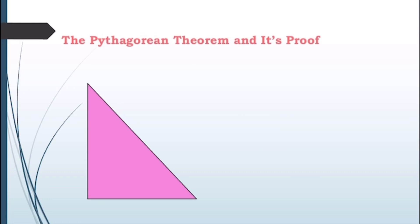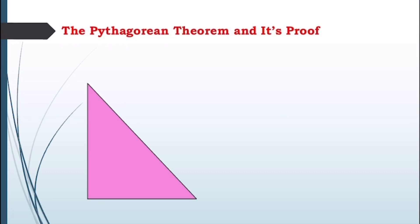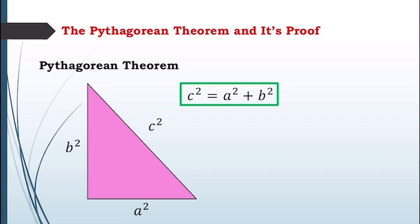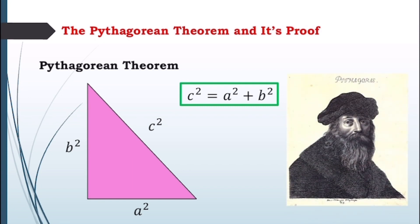Let's proceed to the Pythagorean theorem and its proof. The Pythagorean theorem states that the square of the hypotenuse of a right triangle is equal to the sum of the squares of the legs. The Pythagorean theorem is attributed to the Greek mathematician and philosopher Pythagoras and his followers, who proved this theorem about 2,500 years ago.